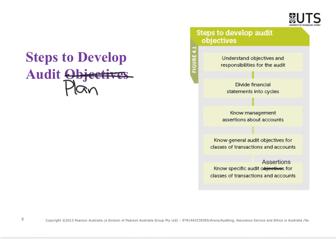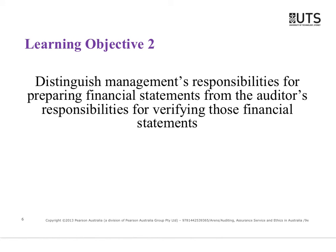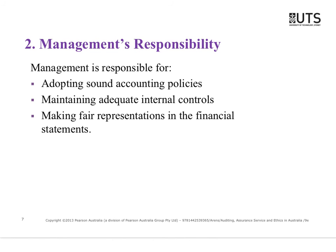Somehow I need to figure out what number is true and how I figure out what the truth is. Are there characteristics of the truth? When we're trying to find out who killed somebody, we look for evidence about who had the murder weapon, the motive, and the opportunity. Similarly with financial statements, we look at who has motivation to manipulate the accounts, who has opportunity, and what does the evidence tell us.